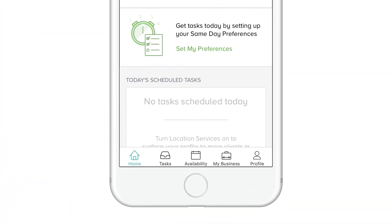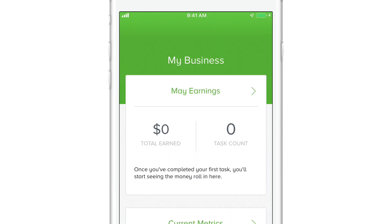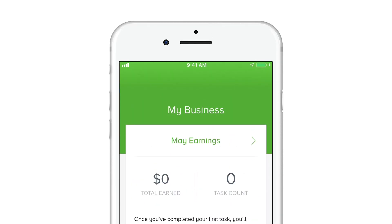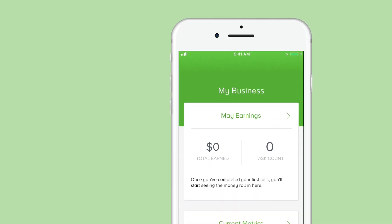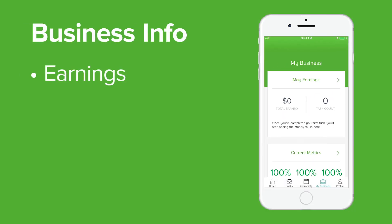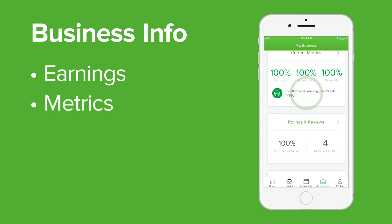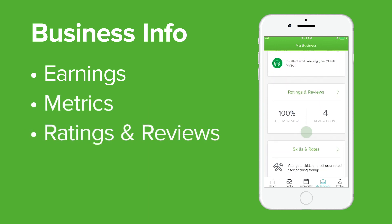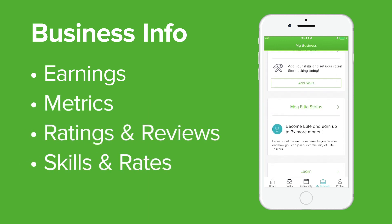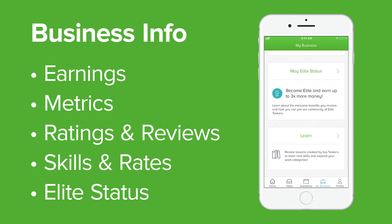To set your skill categories, navigate to the My Business section of your app. Here you'll see all the information relevant to your business, including your monthly earnings, business metrics, ratings and reviews, skills and rates, elite starters, and more.